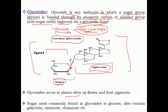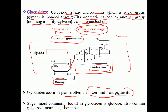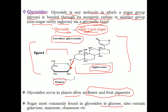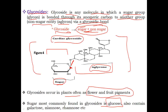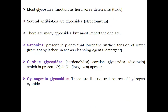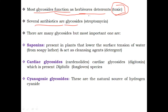Glycosides occur in plants, often as flower and fruit pigments. The sugar most commonly found in glycosides is glucose, but they also contain galactose, mannose, and rhamnose, etc. Many glycosides function as herbivore deterrents because most glycosides are toxic in nature, so herbivores cannot eat them. Also, several antibiotics are glycosides — for example, streptomycin is glycosidic in nature.